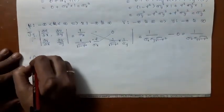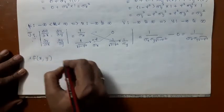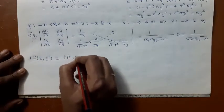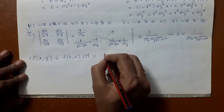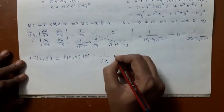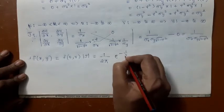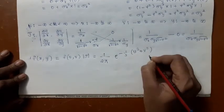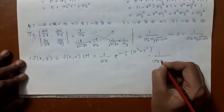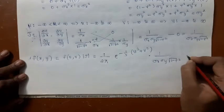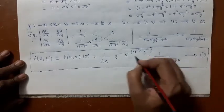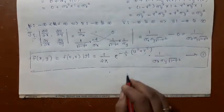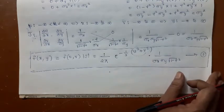Now let us find f(x, y). We have f(x, y) = f(u, v) × |Jacobian|. We already found f(u, v) = (1/2π)·e^(−½(u² + v²)), and the modulus of the Jacobian is 1/(σx·σy·√(1−ρ²)). Let us now compute u² + v² separately and substitute it in.